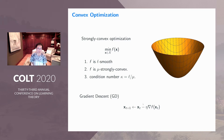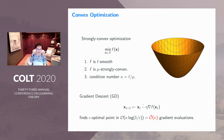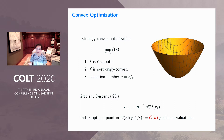A simple algorithm people typically study is called gradient descent, where the next iterate is just equal to the current iterate minus eta, the learning rate, times the gradient. It can be shown that gradient descent is able to find an epsilon-optimal point in O(kappa log(1/epsilon)) steps. For simplicity in this talk, I will denote it as O(kappa), hiding the logarithmic dependence. So we require O(kappa) gradient evaluations.